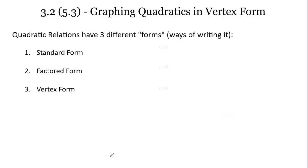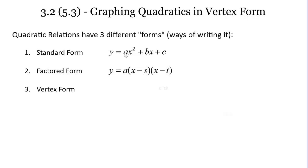Quadratic relations can be written in three different forms. We have standard form — a trinomial where a, b, and c are numbers. We have factored form: a times (x minus s) times (x minus t), called factored form because these are three different factors — a, and the two brackets. You'll see the a value repeated across all three forms.